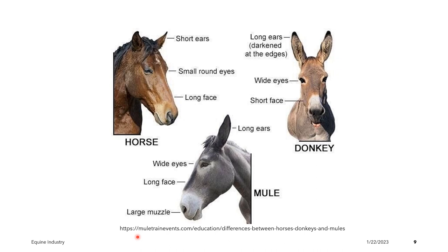When comparing the three in terms of the ears: horses have relatively short ears compared to donkeys and mules. Mules and donkeys have long ears, and for donkeys, the ears are darkened at the edges. In terms of eyes, horses have small round eyes compared to donkeys and mules, which have wide eyes. For the face, horses and mules have a relatively long face compared to donkeys. The mule is also characterized by a large muzzle.